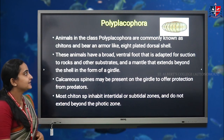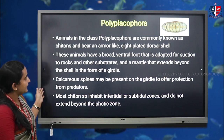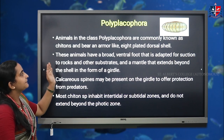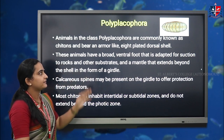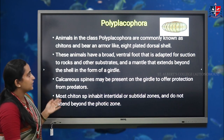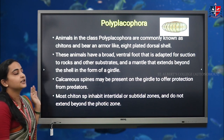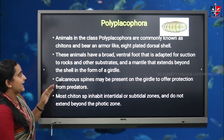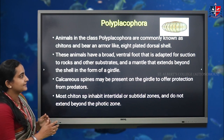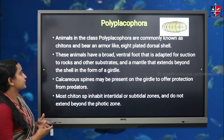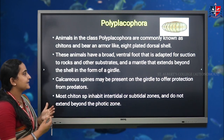Moving on to the third class, Polyplacophora, whose members are also known as chitons. The specialty of species under Polyplacophora is that their body bears an armor-like eight-plated dorsal shell — this is what makes chitons distinctive. They have a broad ventral foot designed for suction to rocks and other suitable substrates.